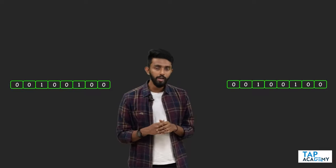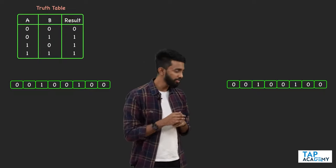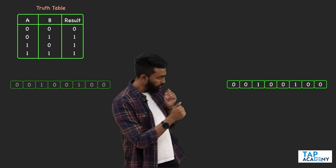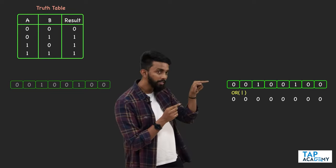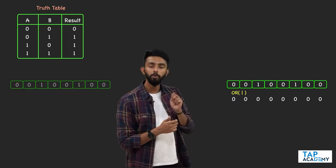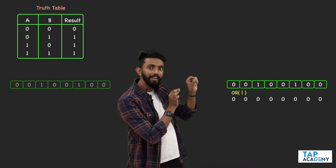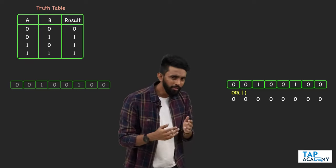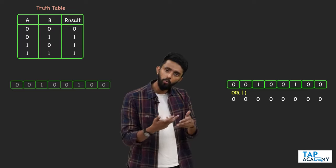I'm bringing the binary number and also the truth table of OR for reference. Below the binary number I'm going to place all zeros, and I'll perform OR operation between them. Tell me: if any bit — whether zero or one — is OR-ed with zero, will it change? Because zero OR zero is zero, and zero OR one is one only.